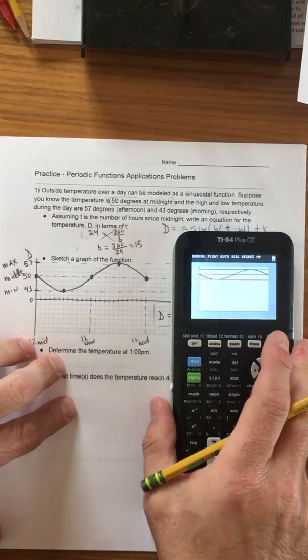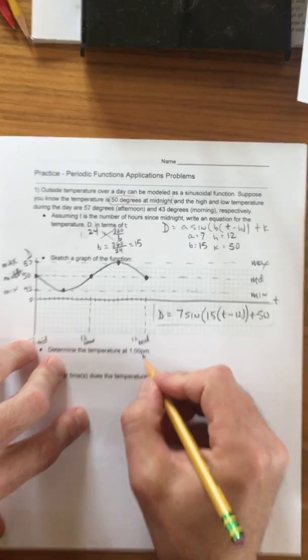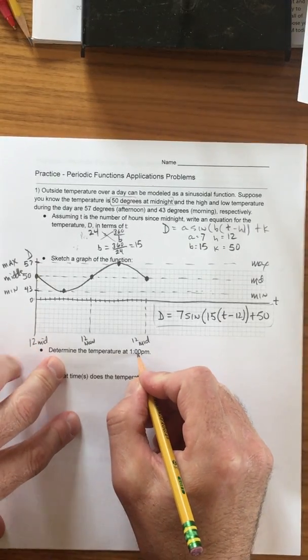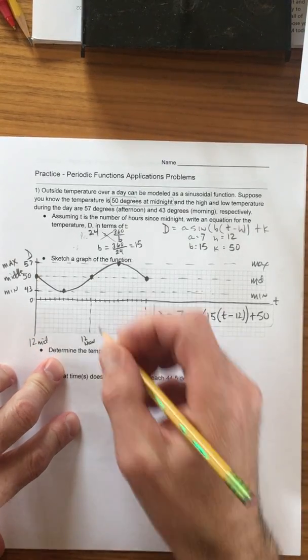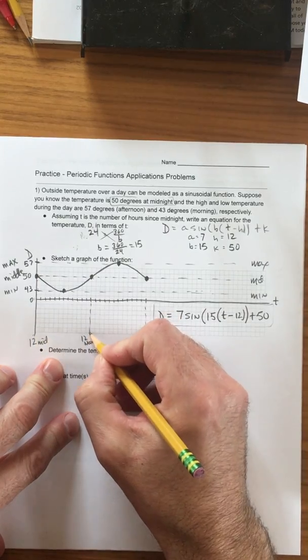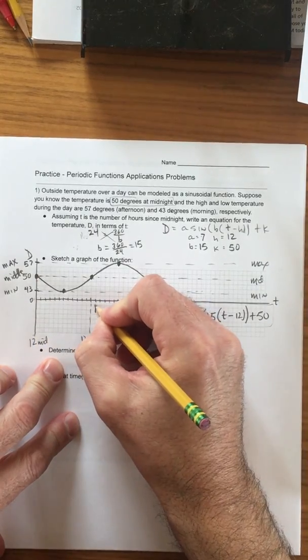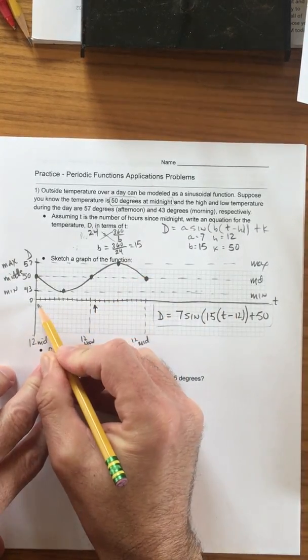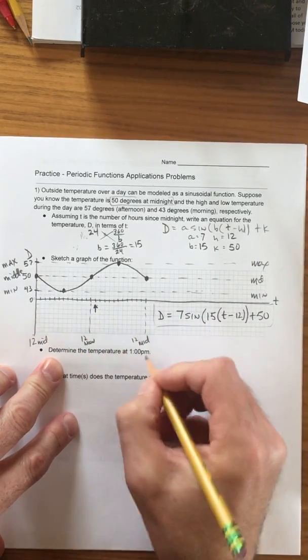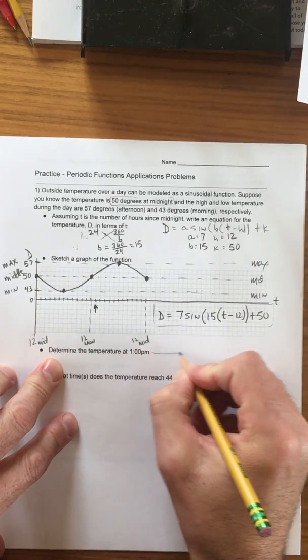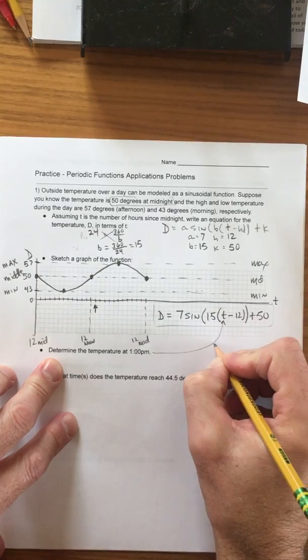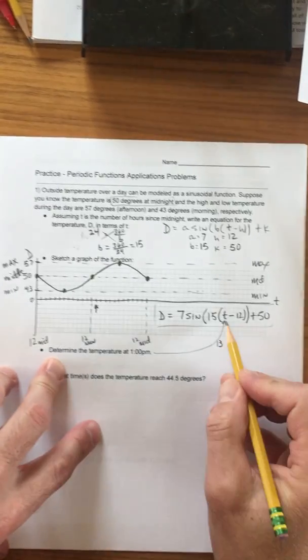Now, determine the temperature at 1 p.m. Well, 1 p.m. is how many hours after midnight? 12 midnight, 12 noon, 1 p.m. would be right there, which would be 12, 13 hours. So we would want to substitute 13 in for T.